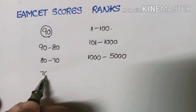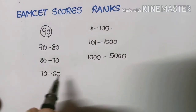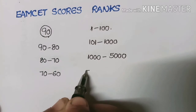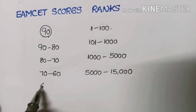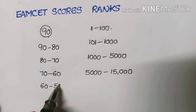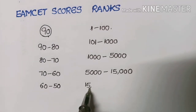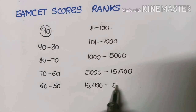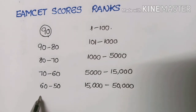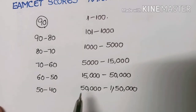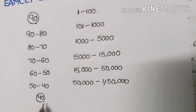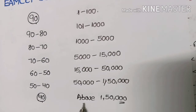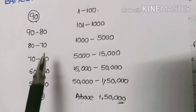If the student secured 60 to 70 MSET score, the expected rank is 5000 to 15000. If the student secured 50 to 60 MSET score, the expected rank is 15000 to 50000. If the student secured 40 to 50, the expected rank is 50000 to 1 lakh 50000. For below 40, the rank will be above 1 lakh 50000.